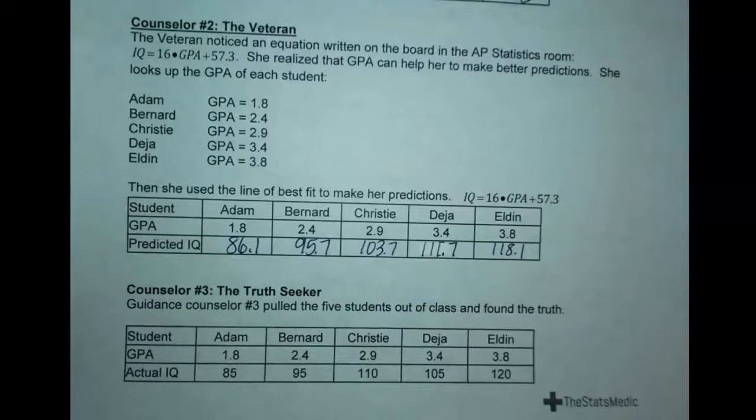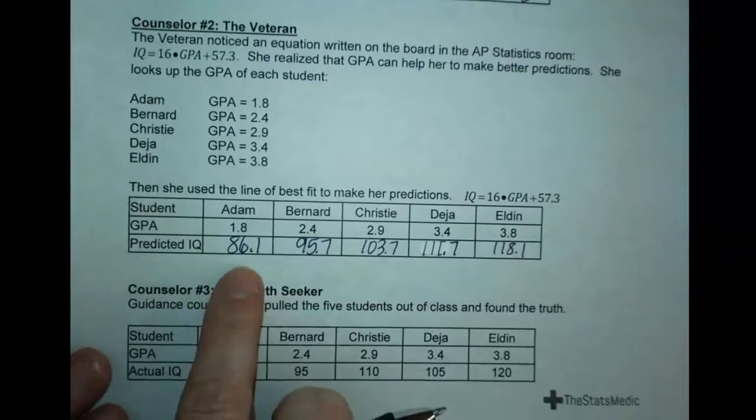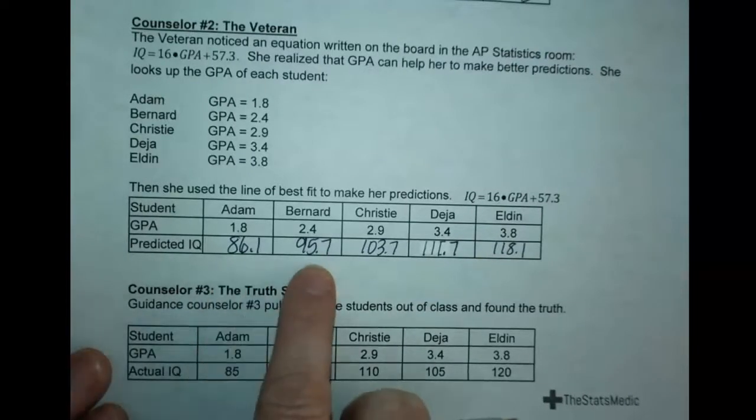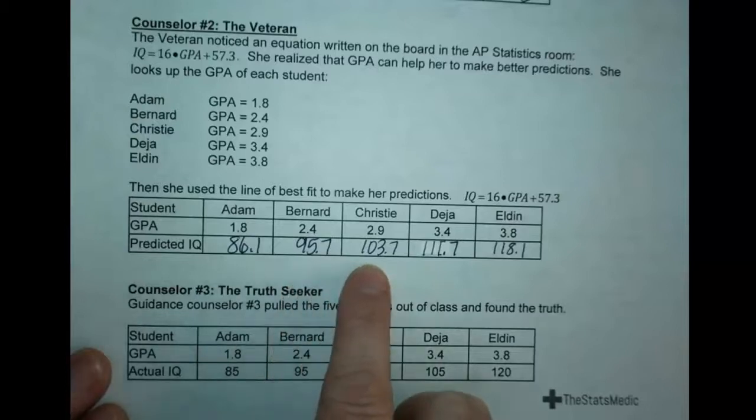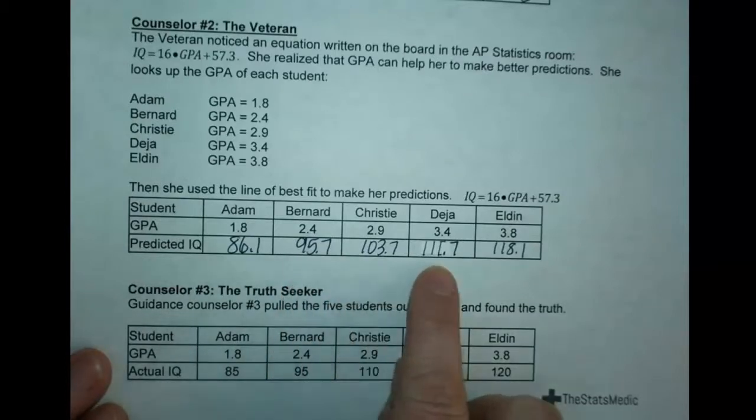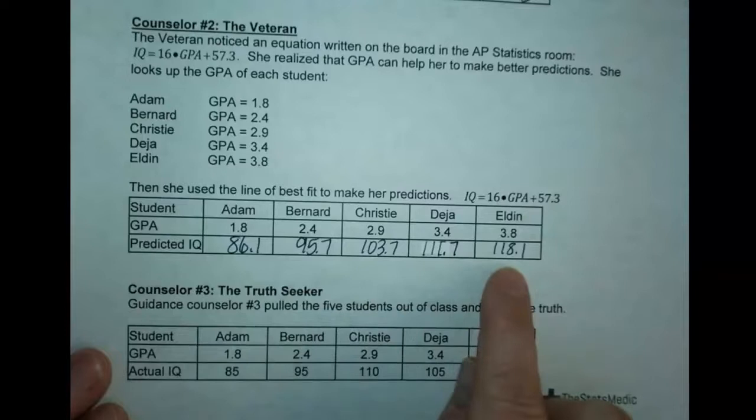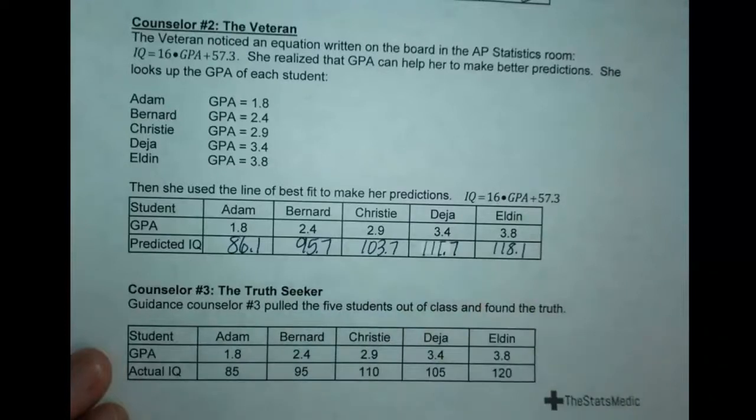For my predicted IQs, I got 86.1 for Adam, 95.7 for Bernard, 103.7 for Christie, 111.7 for Deja, and 118.1 for Eldon.